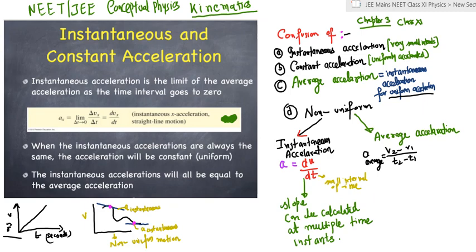Constant acceleration was a concept in class 9. You had a car moving with 2 meters per second square and period. There was nothing called instantaneous. You never calculated anything in a very small interval of time. There was no slope.